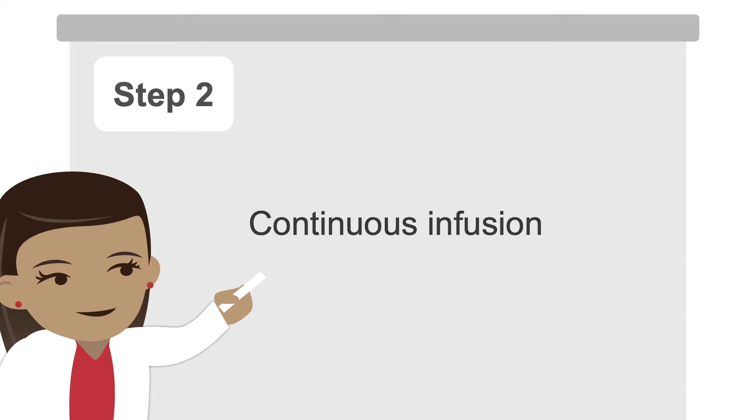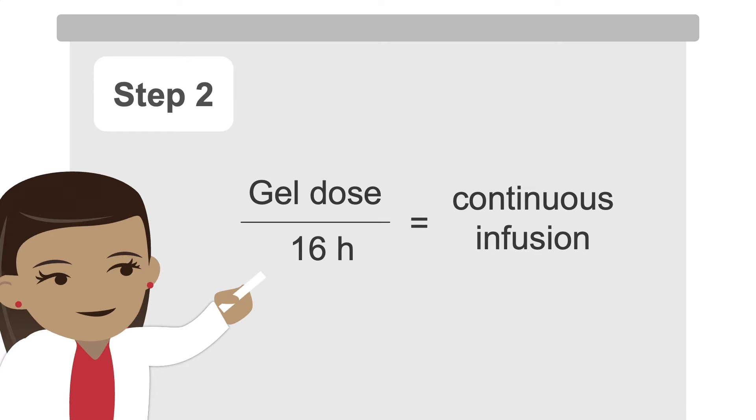Step 2: Calculate the continuous infusion. Add all doses of levodopa taken during the day minus the amount taken in the morning. This gives you the total dose of levodopa needed for the continuous infusion. Divide this total by 20 to convert it to the gel dose. Then divide this number by 16, which is the number of hours during the day that the patient can wear the pump. This gives you the continuous infusion.